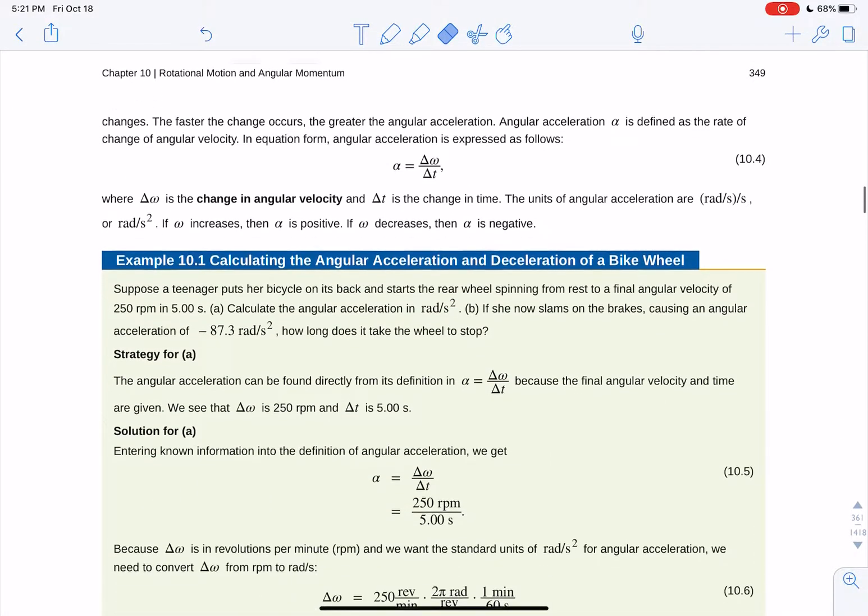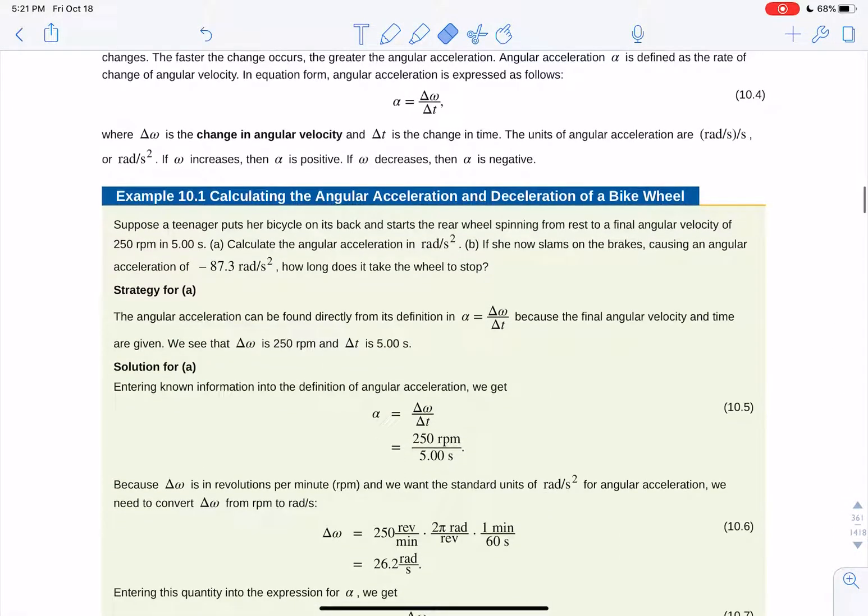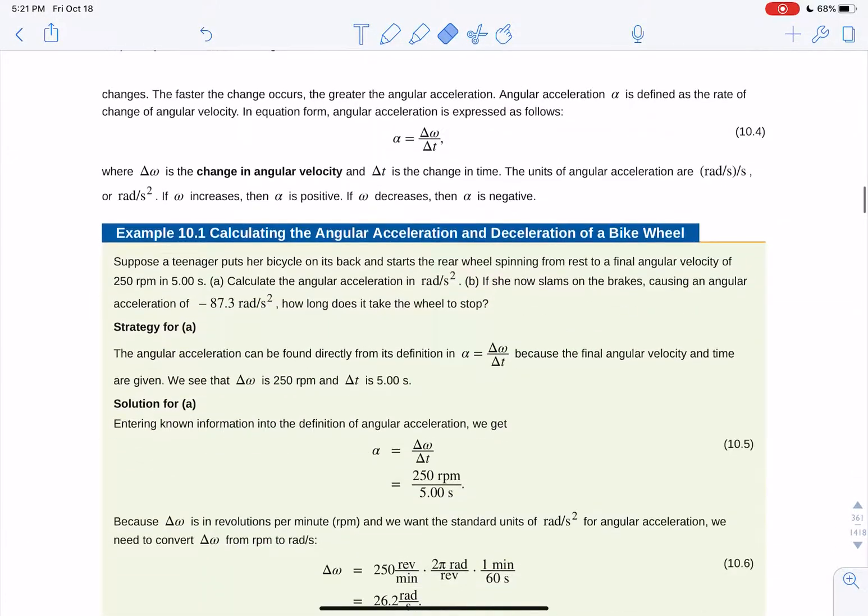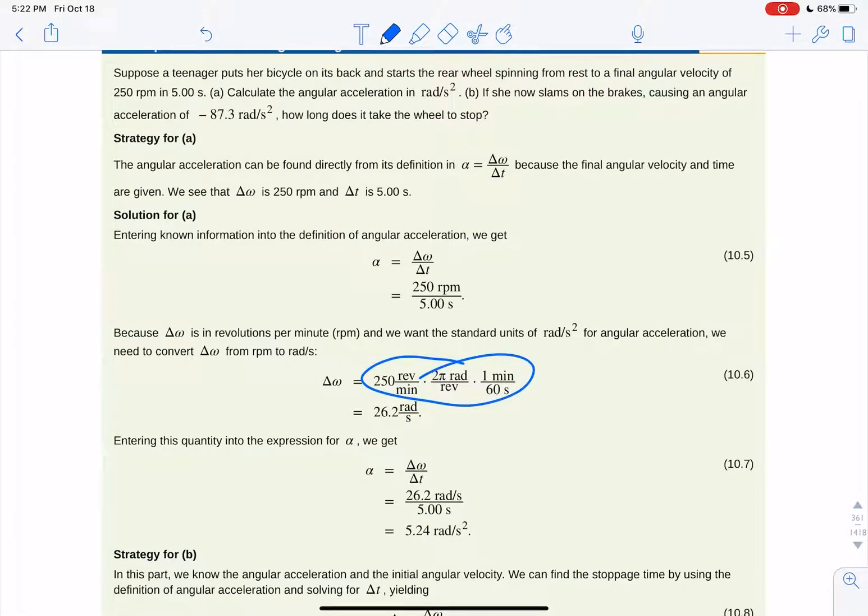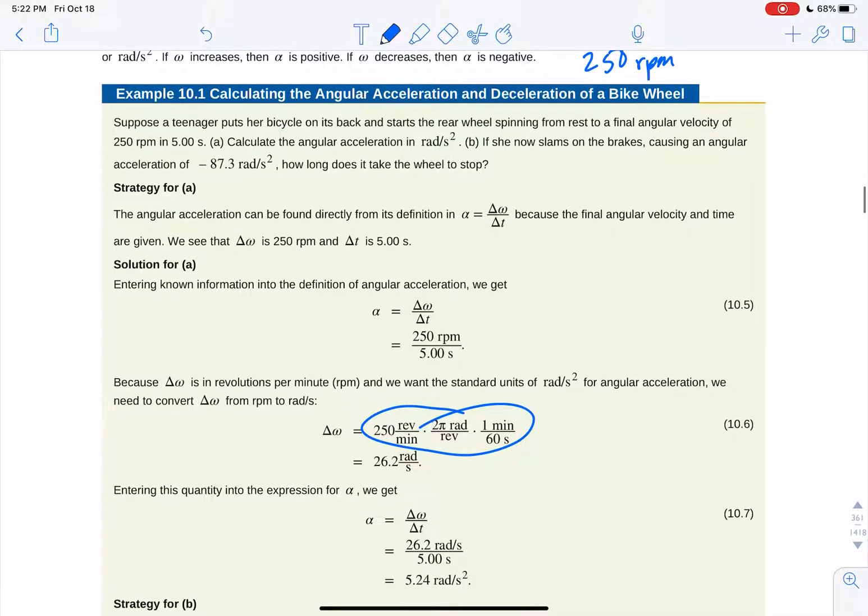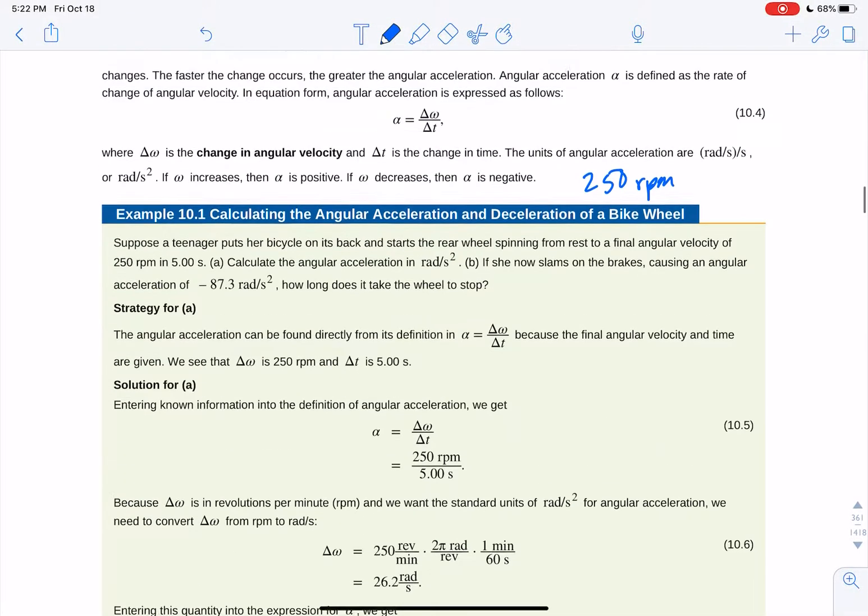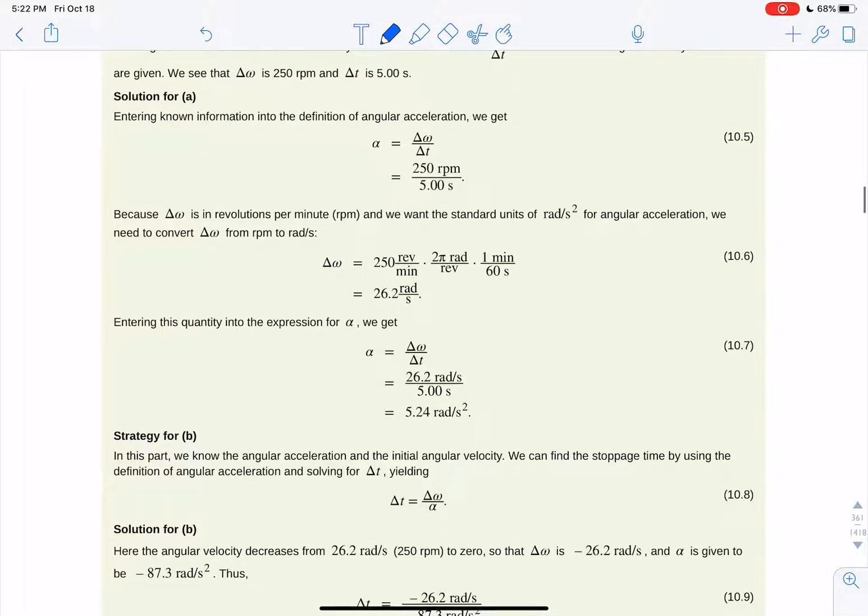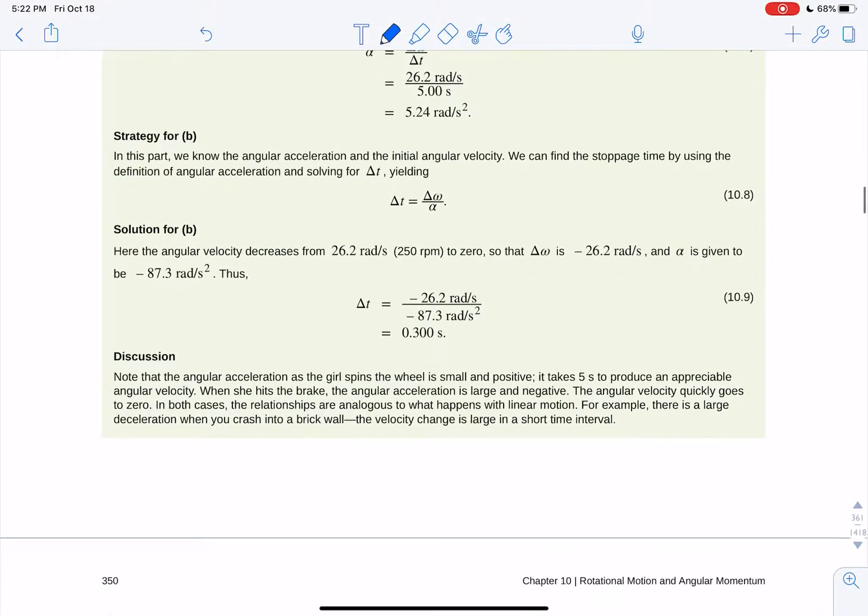Alpha is the change in velocity over change in time. So you can do your regular kinematics equations. If it starts at 250 revolutions per minute, you've got to convert that. There's 2 pi radians in a revolution and 60 seconds in 1 minute. So you've got to convert from revolutions per minute to radians per second and do your conversion there. Study that, and then you can calculate your alpha from there.